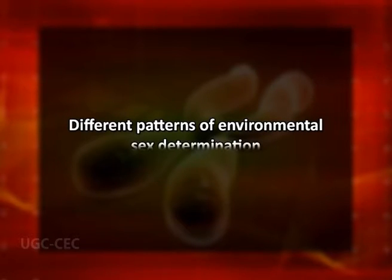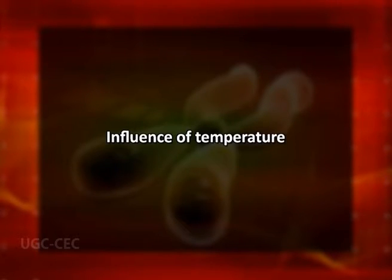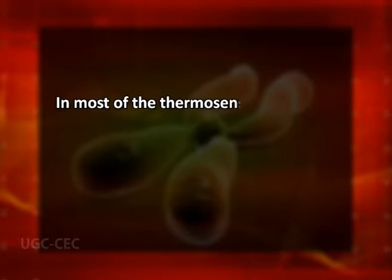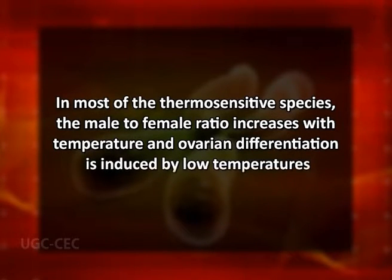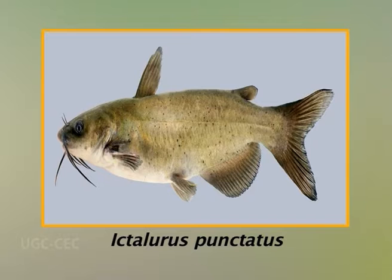Now let us discuss different patterns of environmental sex determination. 1. Influence of Temperature: Similarly to what has been encountered in reptiles and amphibians, three main types of responses to temperature have been reported in fish. In most thermosensitive species, the male-to-female ratio increases with temperature and ovarian differentiation is induced by low temperatures. Conversely, in some rare species, e.g. the channel catfish Ictalurus punctatus, high temperatures may produce female-biased sex ratios and low temperatures promote male-biased sex ratios.